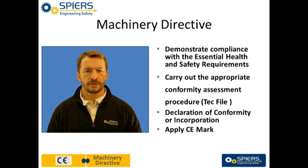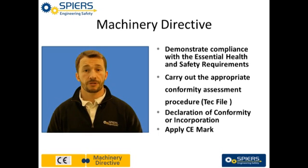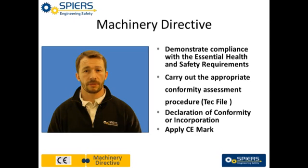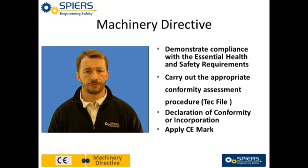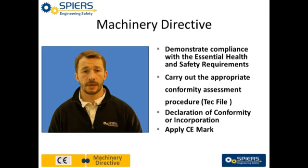The supply of machines in the UK is regulated by the Machinery Directive and its UK implementations. This results in a technical construction file, a declaration of conformity or incorporation, and a CE mark.